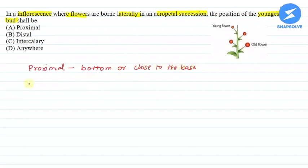Next we have distal. Distal means that it will be towards the apex end. This is distal.